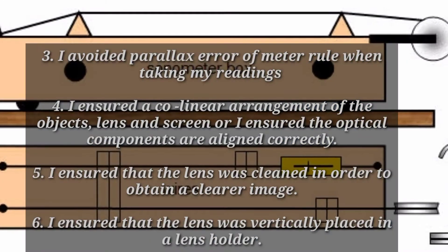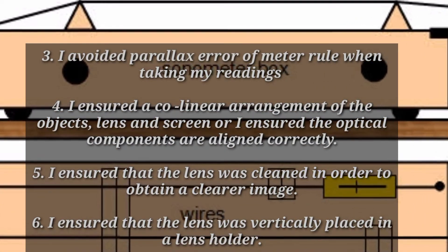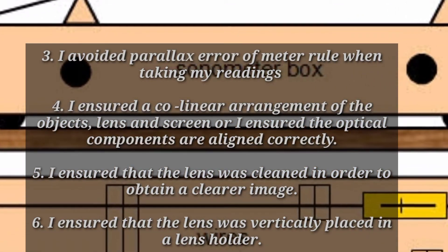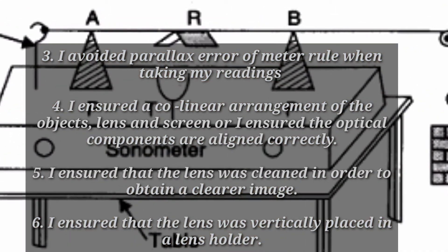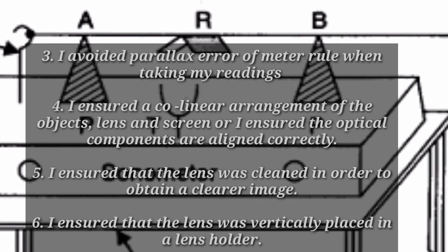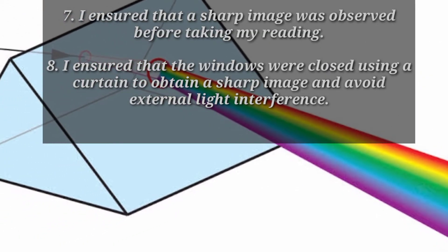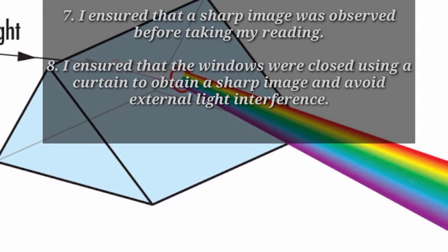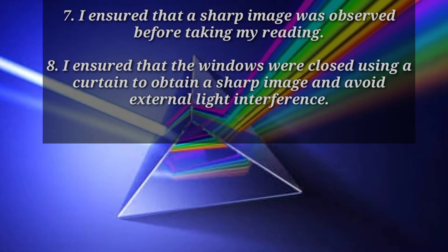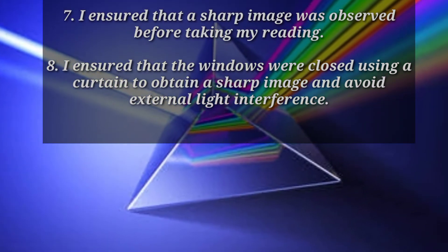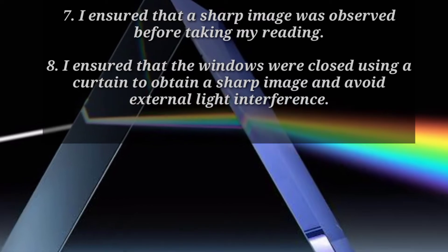5. I ensured that the lens was cleaned in order to obtain a clearer image. 6. I ensured that the lens was vertically placed in a lens holder. 7. I ensured that the windows were closed using a curtain to obtain a sharp image and avoid external light interference.